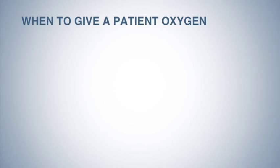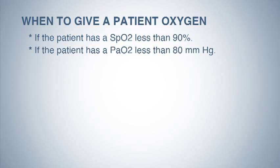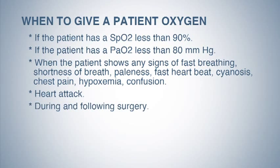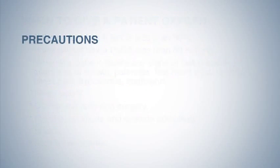An overview of when to give a patient oxygen: if the patient has an SpO2 less than 90 percent, a PaO2 less than 80 millimeters of mercury, or when the patient shows signs of fast breathing, shortness of breath, paleness, fast heartbeat, cyanosis, chest pain, hypoxemia, or confusion. Also during and following a heart attack, surgery, carbon monoxide and cyanide poisoning, for shock, and in premature infants.